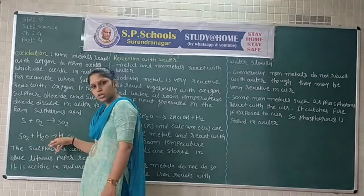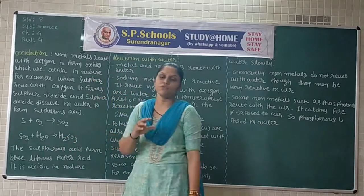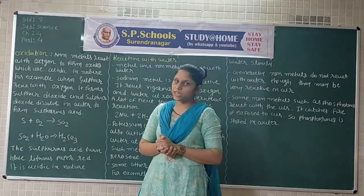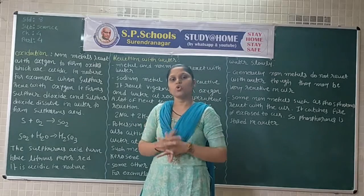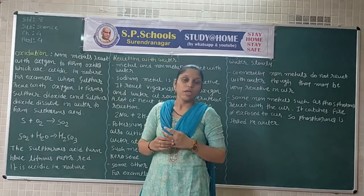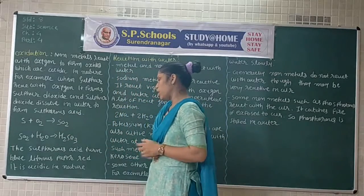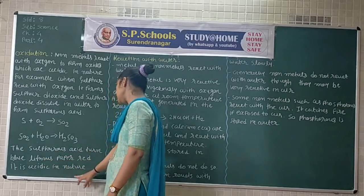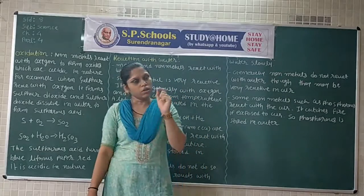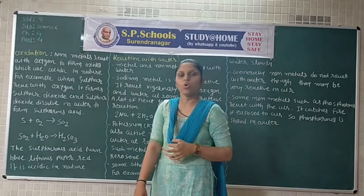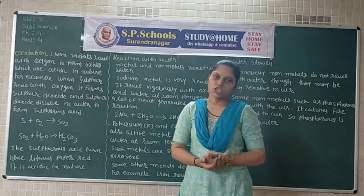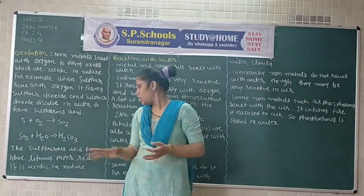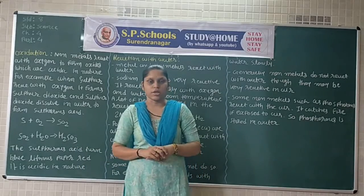When sulphur dioxide is absorbed in water, it forms sulphurous acid. If we check the nature of this solution, it is acid in nature. The sulphurous acid turns blue litmus paper red. This confirms it is acid in nature. The blue litmus paper turns red due to the sulphurous acid.